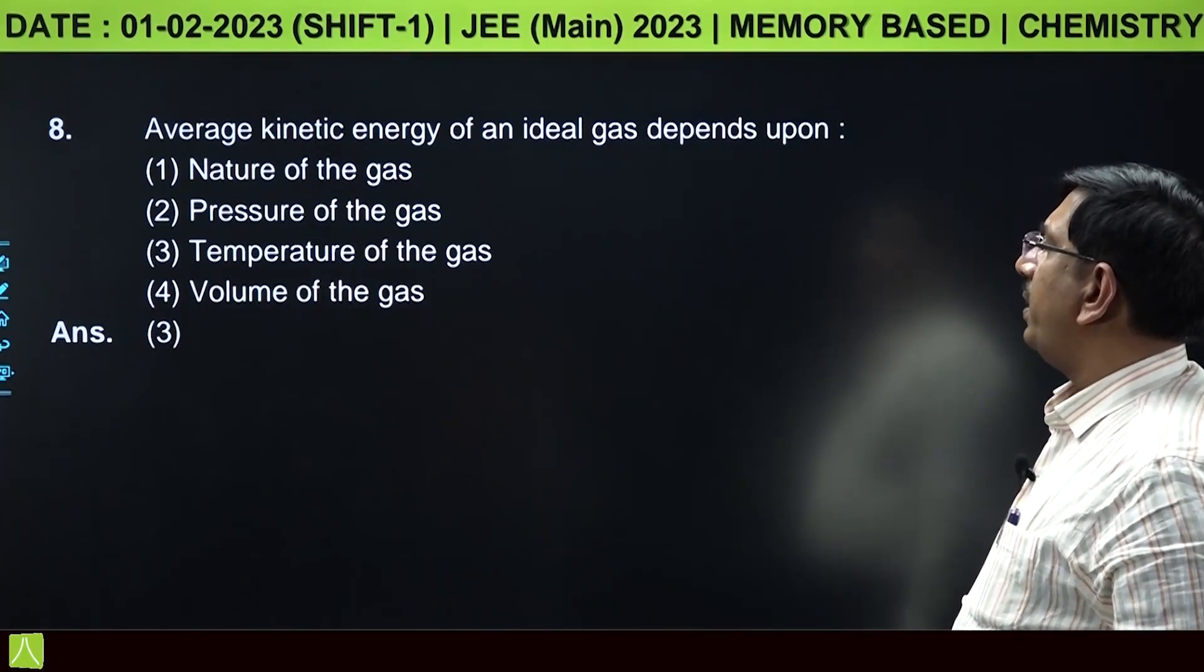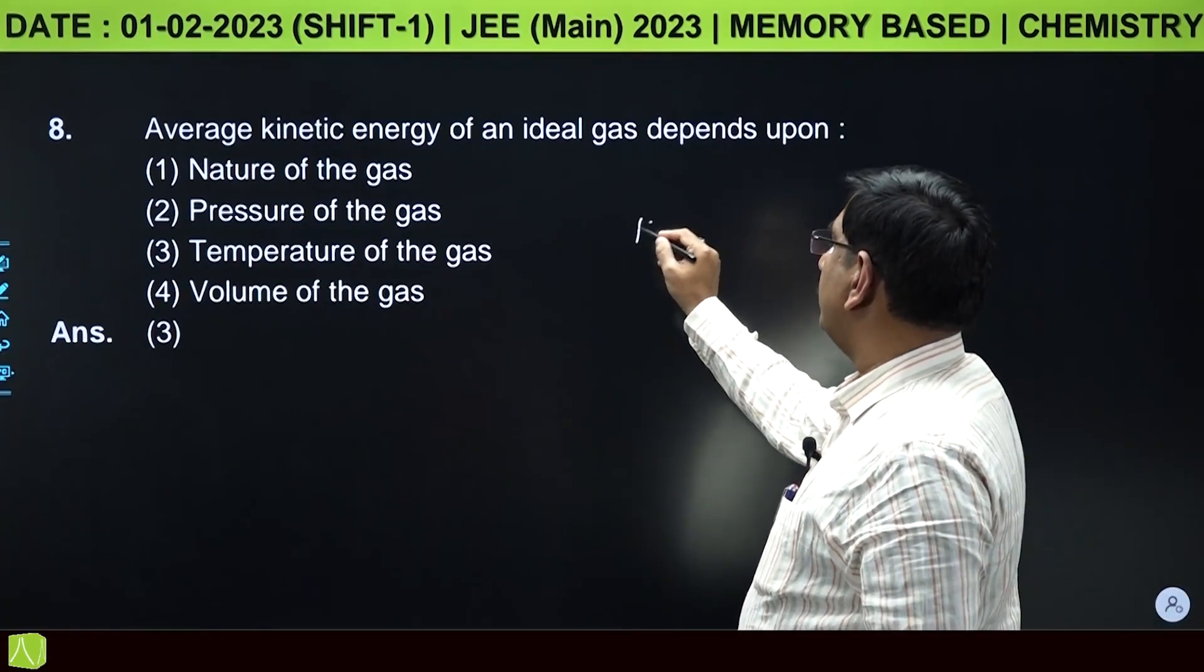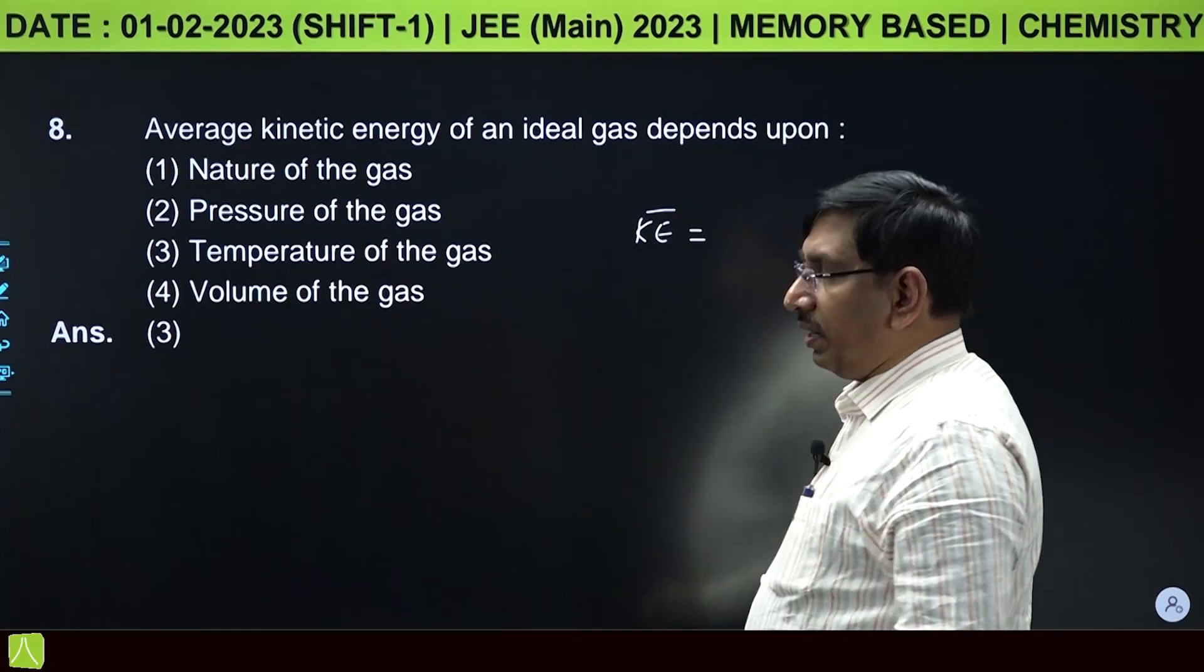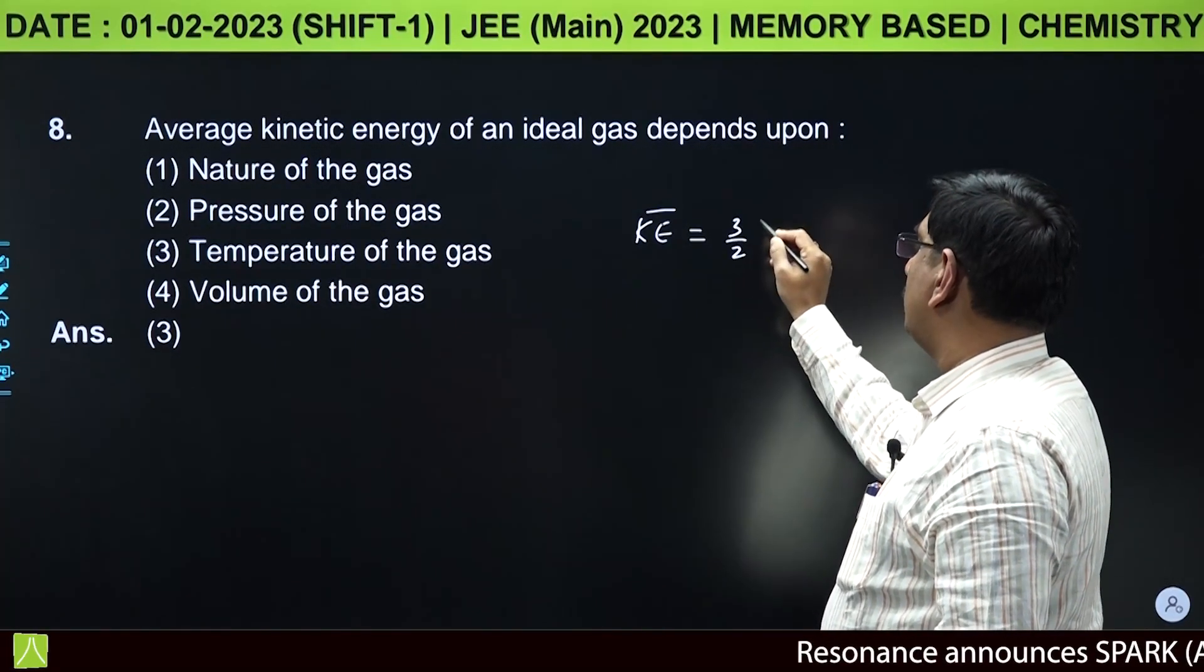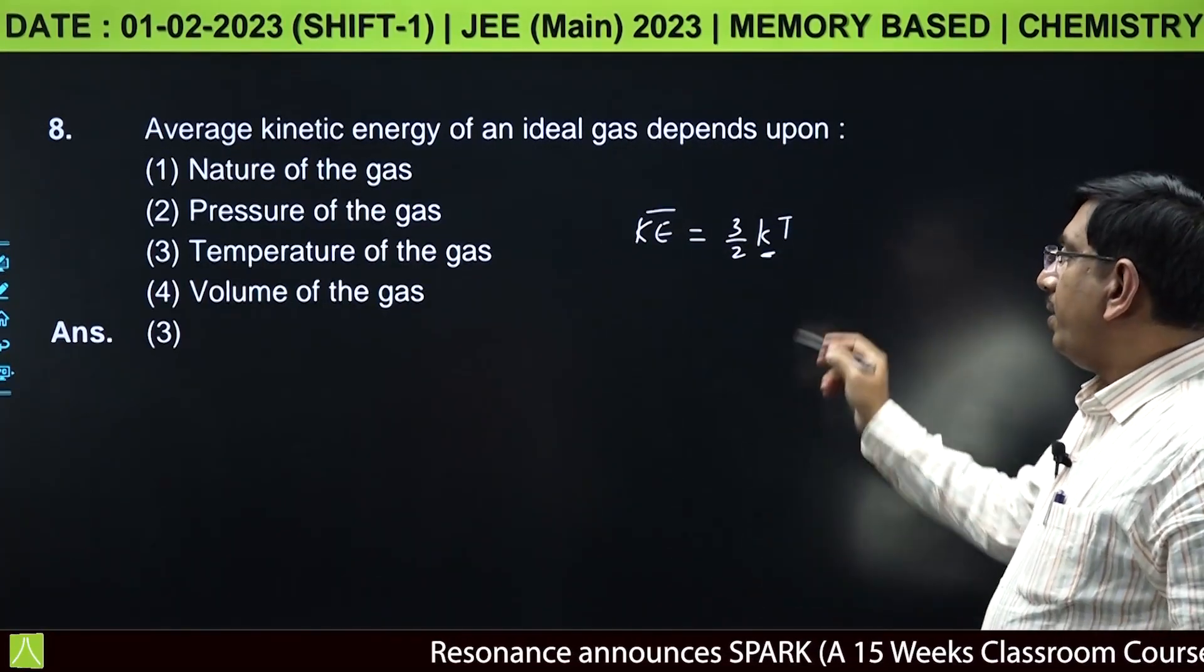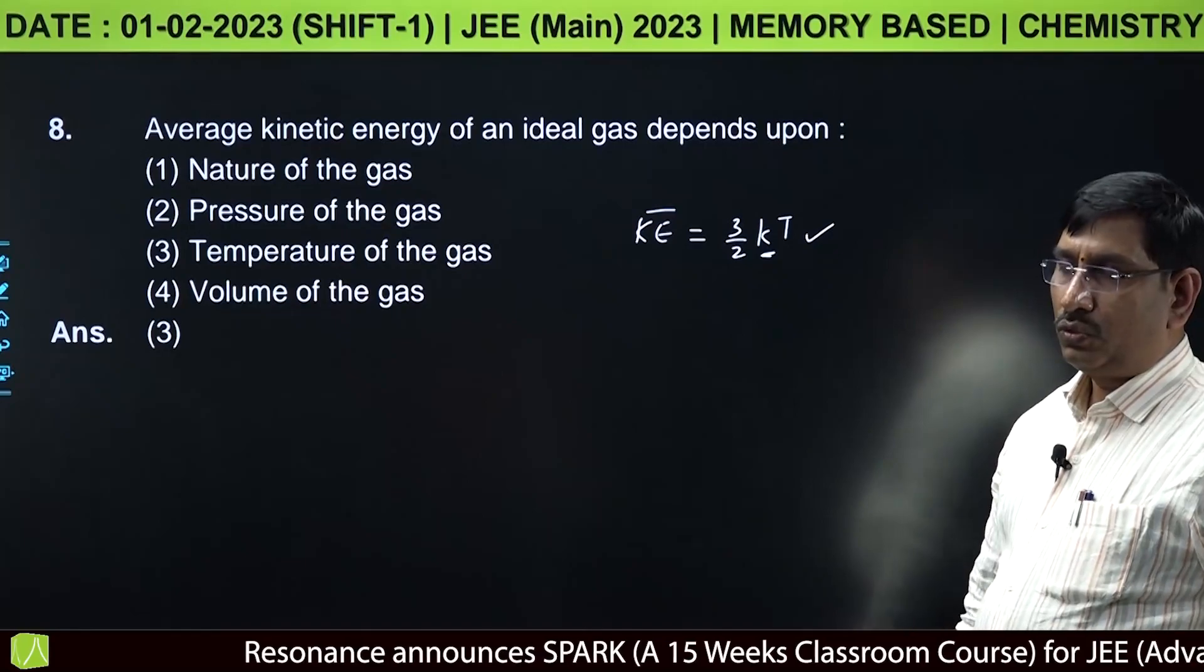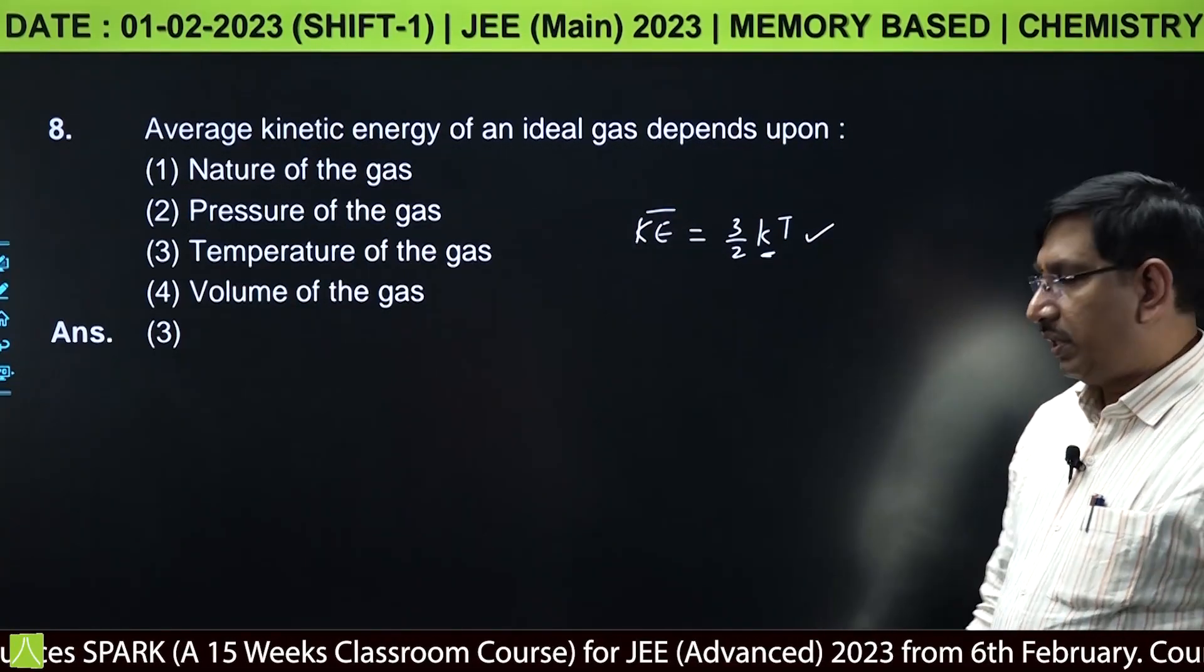Average kinetic energy of an ideal gas depends upon: kinetic energy per molecule = 3/2 KT, where K is Boltzmann's constant and T is temperature. So average kinetic energy depends on temperature of the gas only.